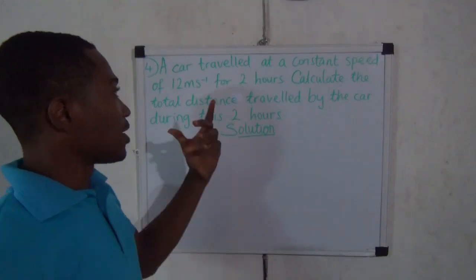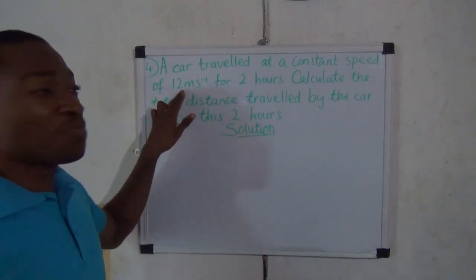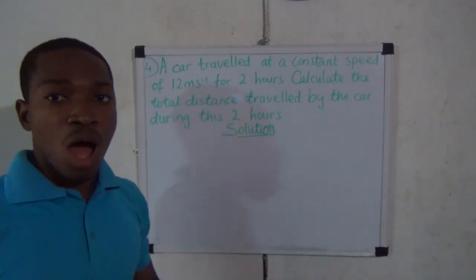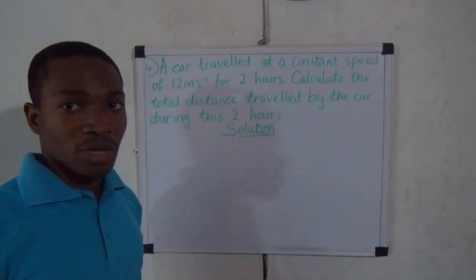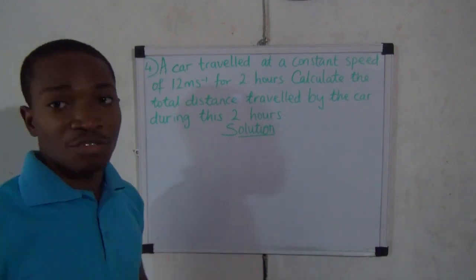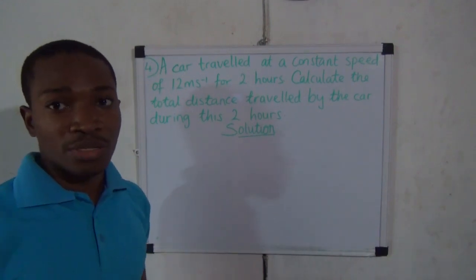A car traveled at a constant speed of 12 meters per second for 2 hours. Calculate the total distance traveled by the car during these 2 hours.